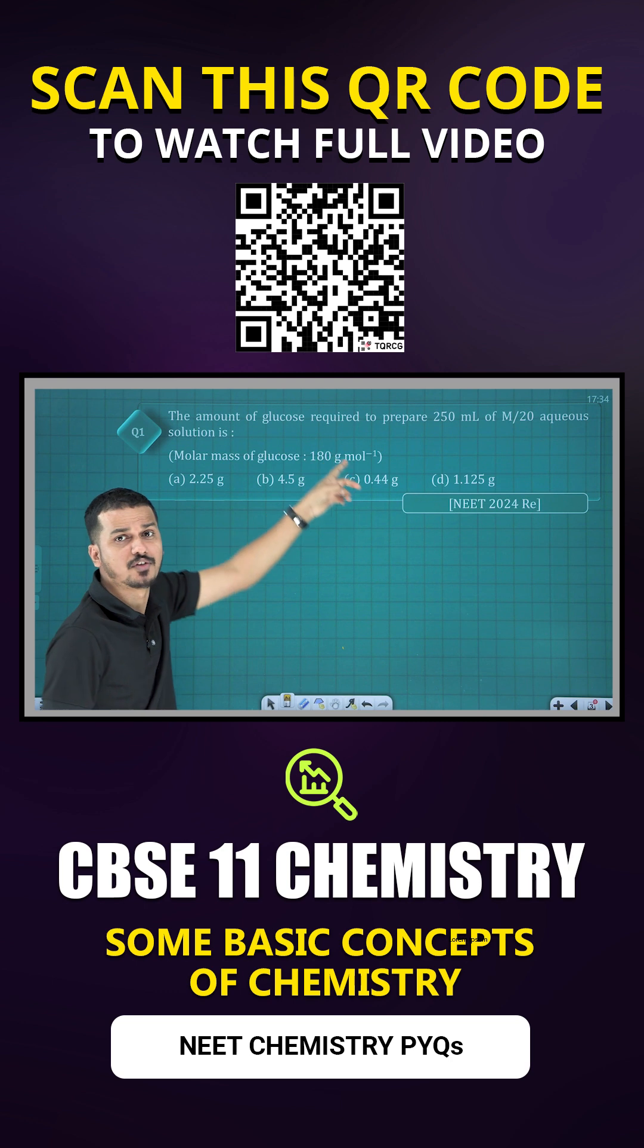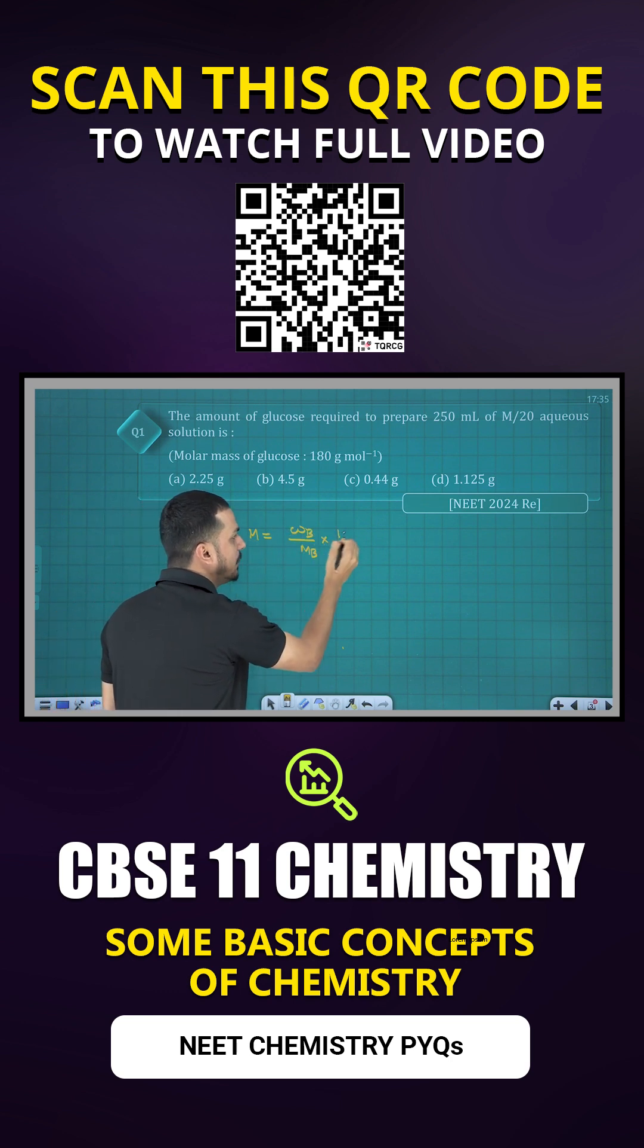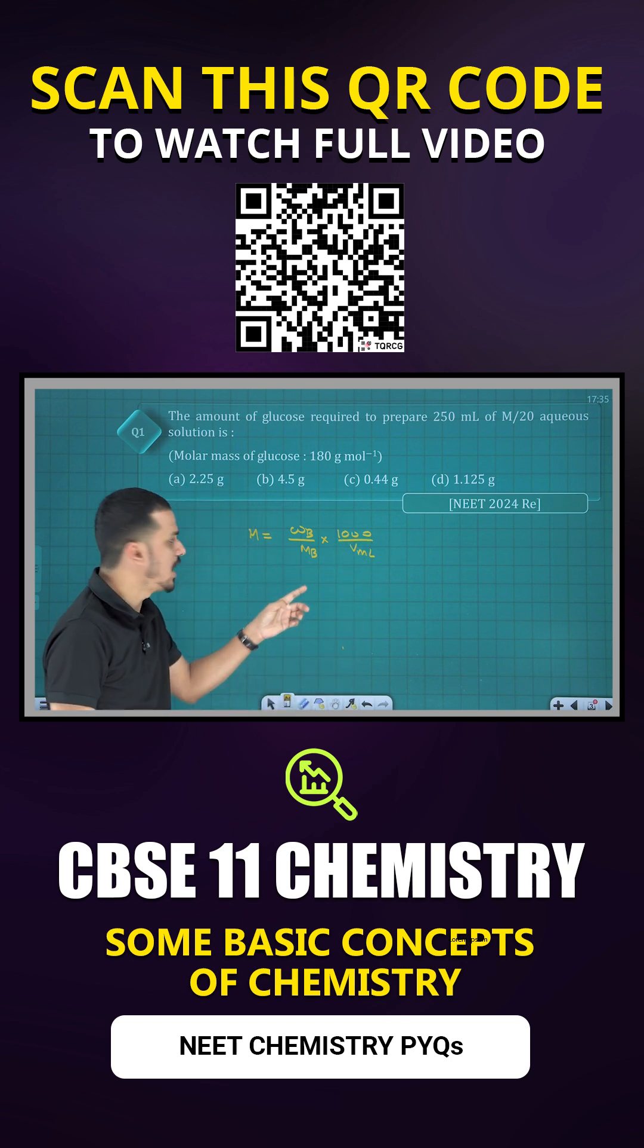What we can do - we have the formula related to molarity. Molarity is equal to: Wb/Mb × 1000/V ml. Given mass by molar mass, into thousand, divided by volume in milliliter.